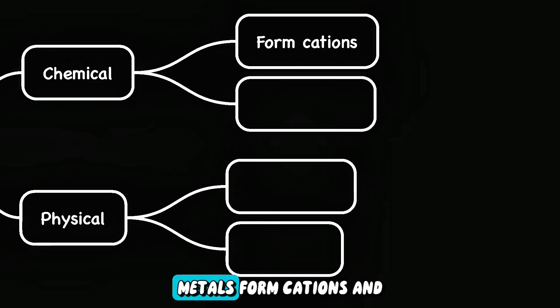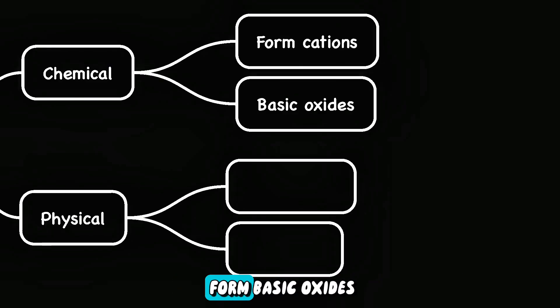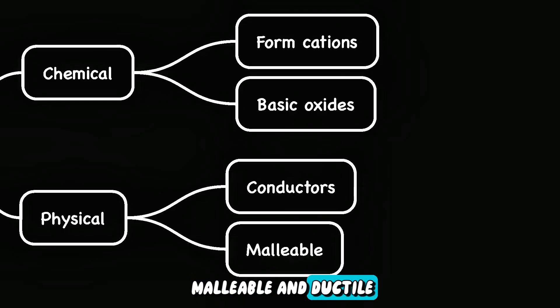For chemical properties, metals form cations and form basic oxides. The general physical properties of metals is that they are conductors of heat and electricity. In addition, they are malleable and ductile.